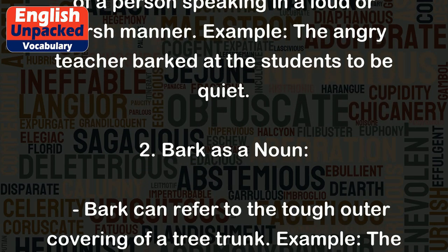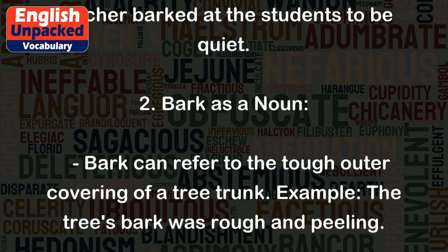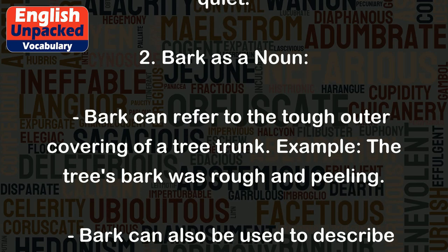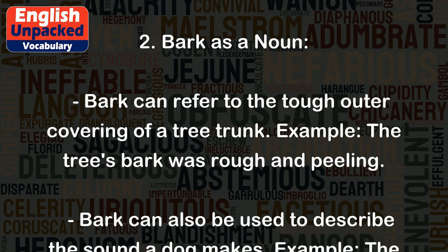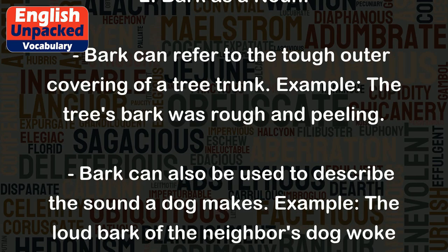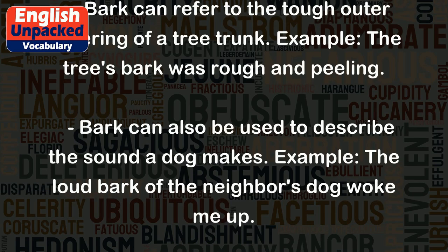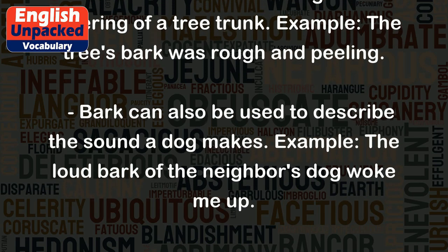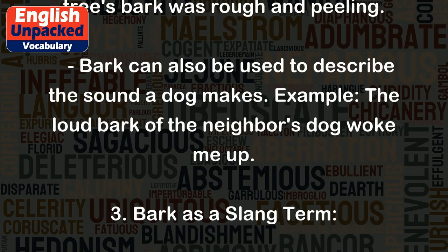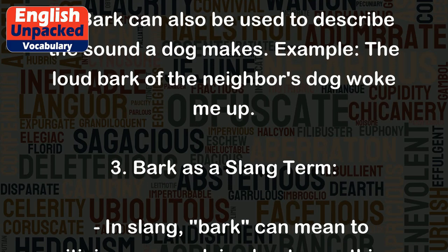2. Bark as a noun. Bark can refer to the tough outer covering of a tree trunk. Example: the tree's bark was rough and peeling. Bark can also be used to describe the sound a dog makes. Example: the loud bark of the neighbor's dog woke me up.